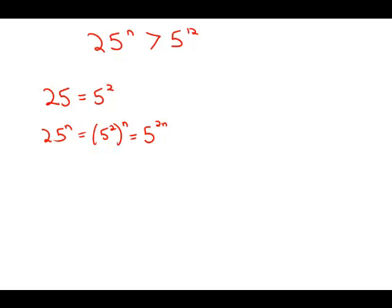And so really, that first inequality simplifies to 5 to the 2n is greater than 5 to the 12th. Well, now, because the bases are equal, we can discard the bases and just look at the exponents directly.